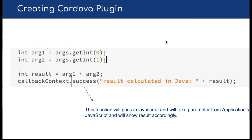This is what we will implement in our Cordova plugin, where we can take two arguments — argument one and argument two. This is the success method. This function will be called in JavaScript and will take parameters from the application's JavaScript, then show the result accordingly.